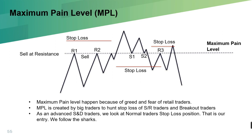The first character of Maximum Pain Level is that it happens because of the greed and fear of retail traders. If you remember from the first episode, the big bank is the shark and you guys are just the small sardine fish. Maximum Pain Level is created by big traders to hunt the stop losses of support/resistance traders and breakout traders. A lot of people when they start learning forex trading talk about support resistance, but the real meaning of support resistance is what many do not understand.